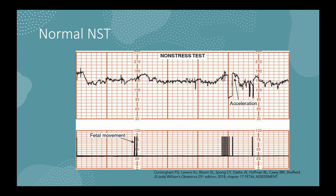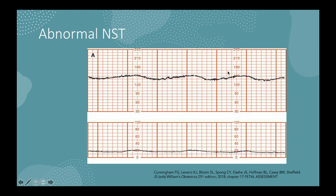Here is an example of a normal NST result. In the upper panel is the fetal heart rate and in the lower panel are markings for fetal movement. For every fetal movement, there is a corresponding acceleration — a rise in the fetal heart rate of at least 15 beats per minute lasting at least 15 seconds. In contrast, an abnormal NST, likely from an acidotic fetus, shows no accelerations and very minimal variability in the fetal heart rate.